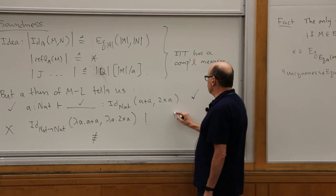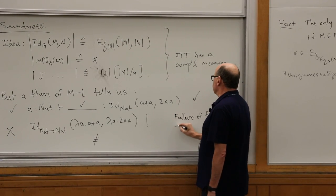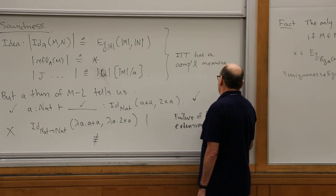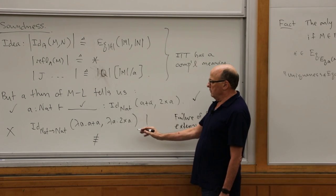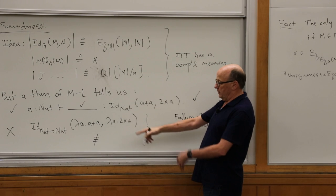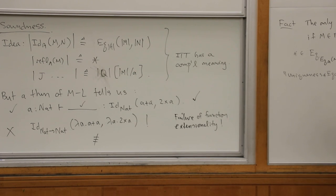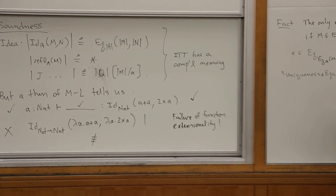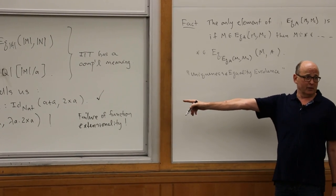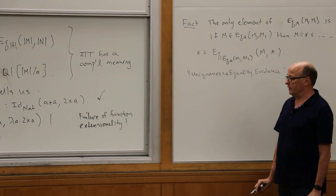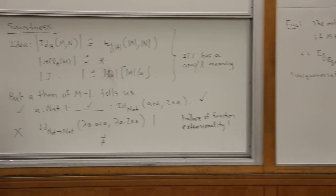This is called the failure of function extensionality, and it's kind of famous. Even though, under interpretation — if I interpret these down into the type theory, interpreting id as equality — those will be equal. So it's true, but it's not provable in the formalism. It's a kind of incompleteness in the sense that you could very well care about this, and it's not something you can prove in that formalism.